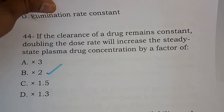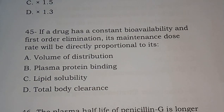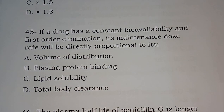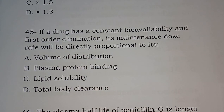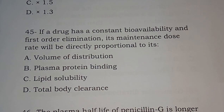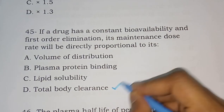Question 45: If a drug has constant bioavailability and first-order elimination, its maintenance dose rate will be directly proportional to its volume of distribution, plasma protein binding, lipid solubility, or total body clearance. These questions are important for pharmacist exams and are based on B-pharm syllabus. The correct answer is option D, total body clearance.